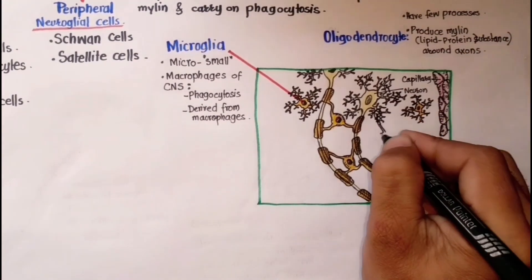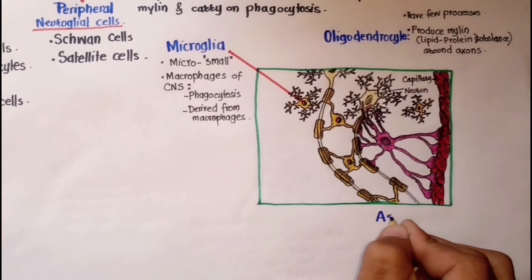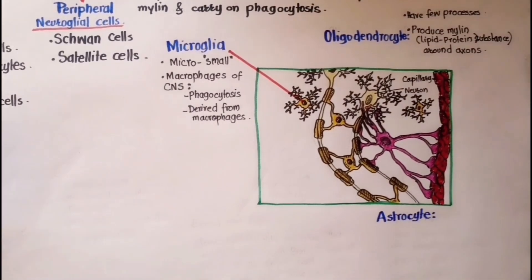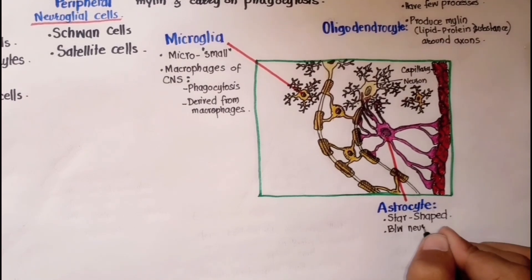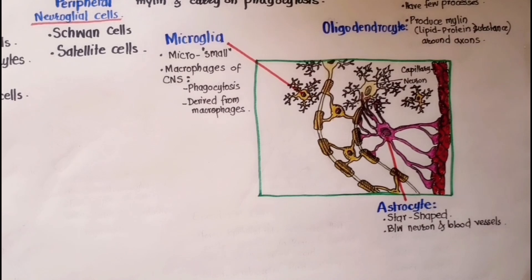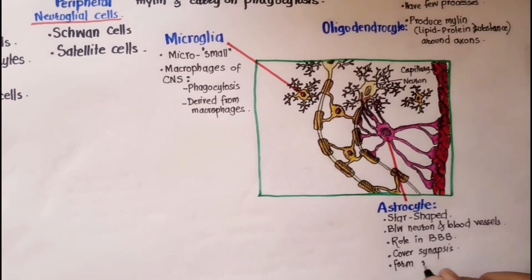The third type of neuroglial cells in the central nervous system are the astrocytes. Astrocytes are star-shaped cells commonly found between neurons and blood vessels. They have a special role in the formation of the blood-brain barrier, which helps regulate the concentrations of nutrients and ions within the tissue. These cells provide structural support to neurons, extend their processes to cover the synapses, and following injury, form scar tissue.